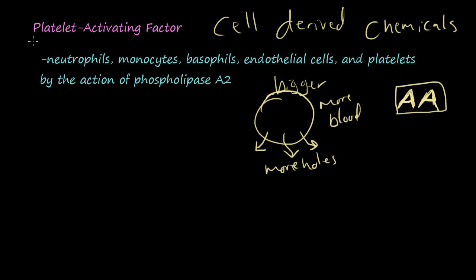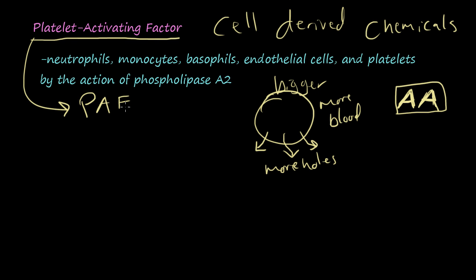In this video we're going to start talking about platelet activating factor, which has the acronym PAF — platelet activating factor. Neutrophils, monocytes, basophils, endothelial cells, and platelets are the primary cells that produce this platelet activating factor, and it's produced by the action of phospholipase A2.